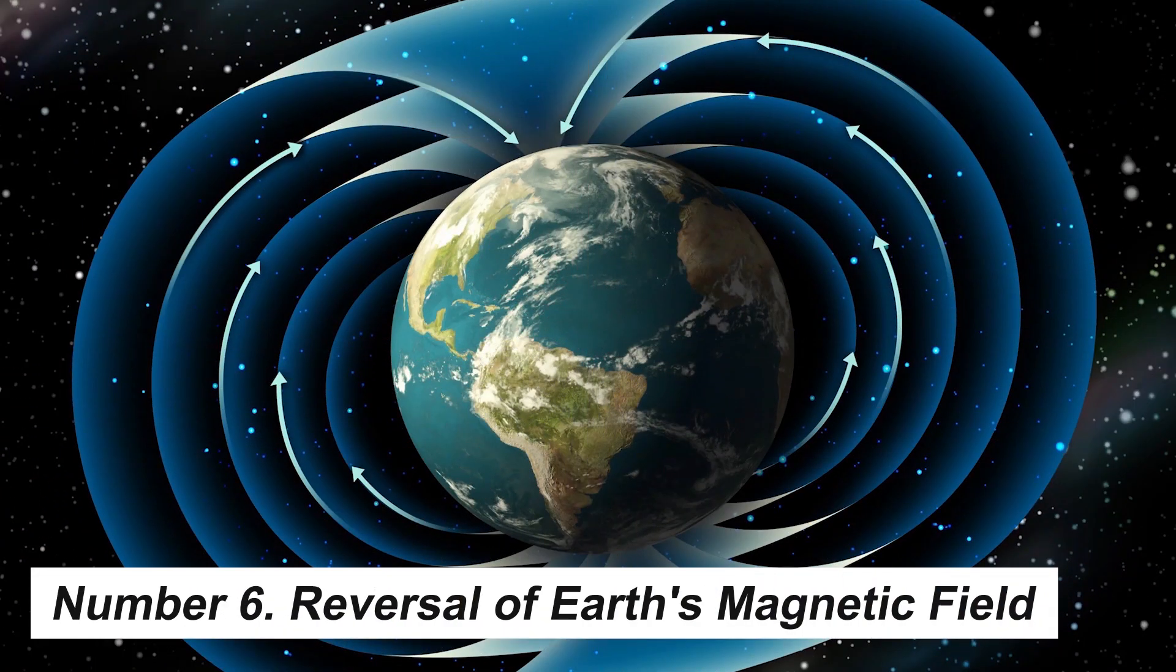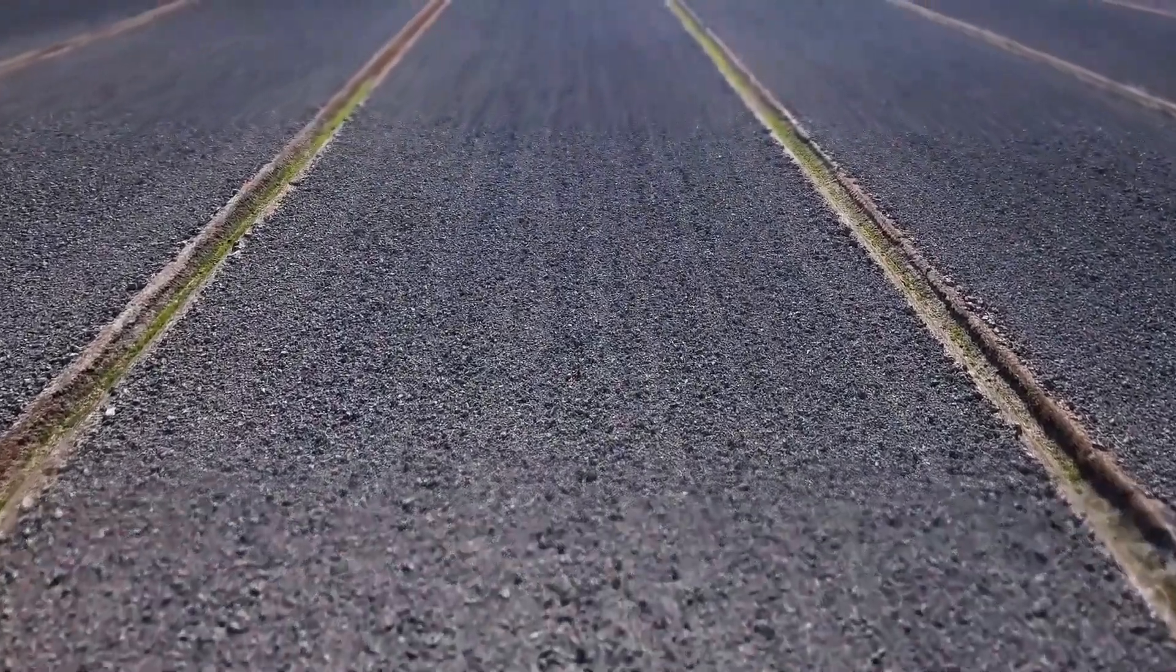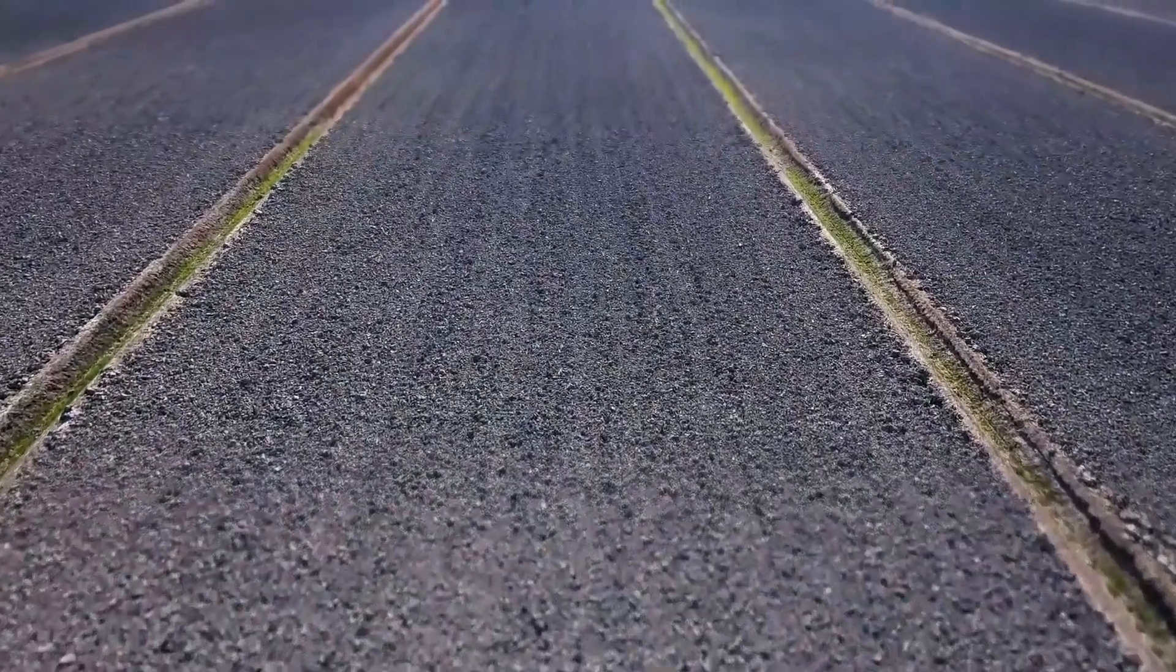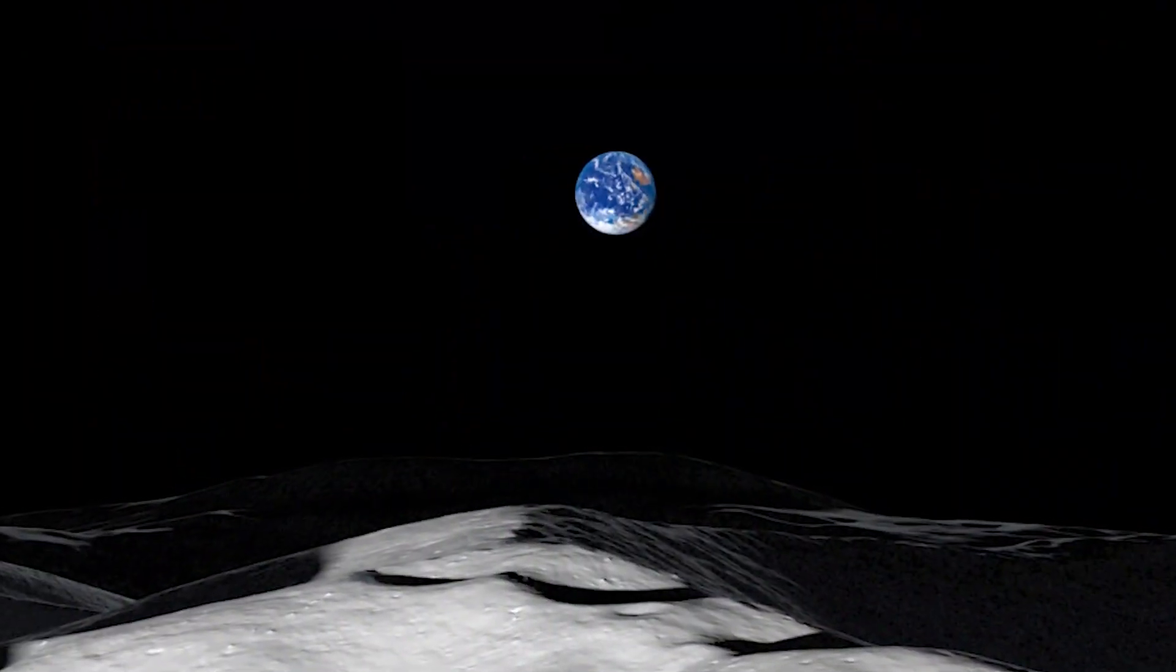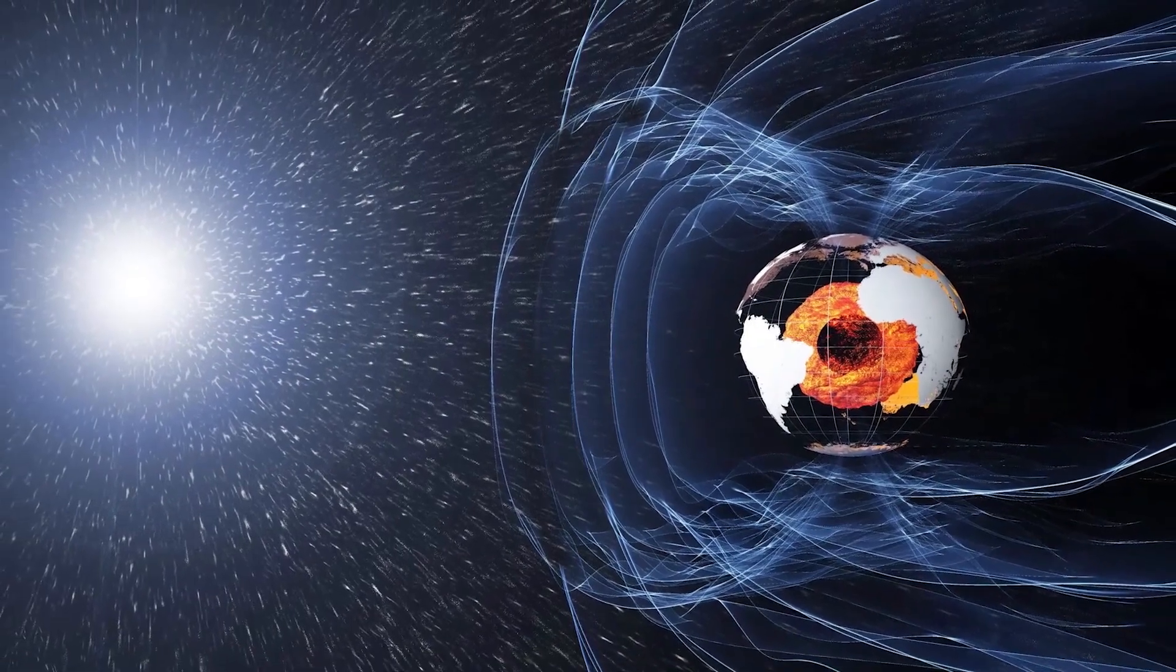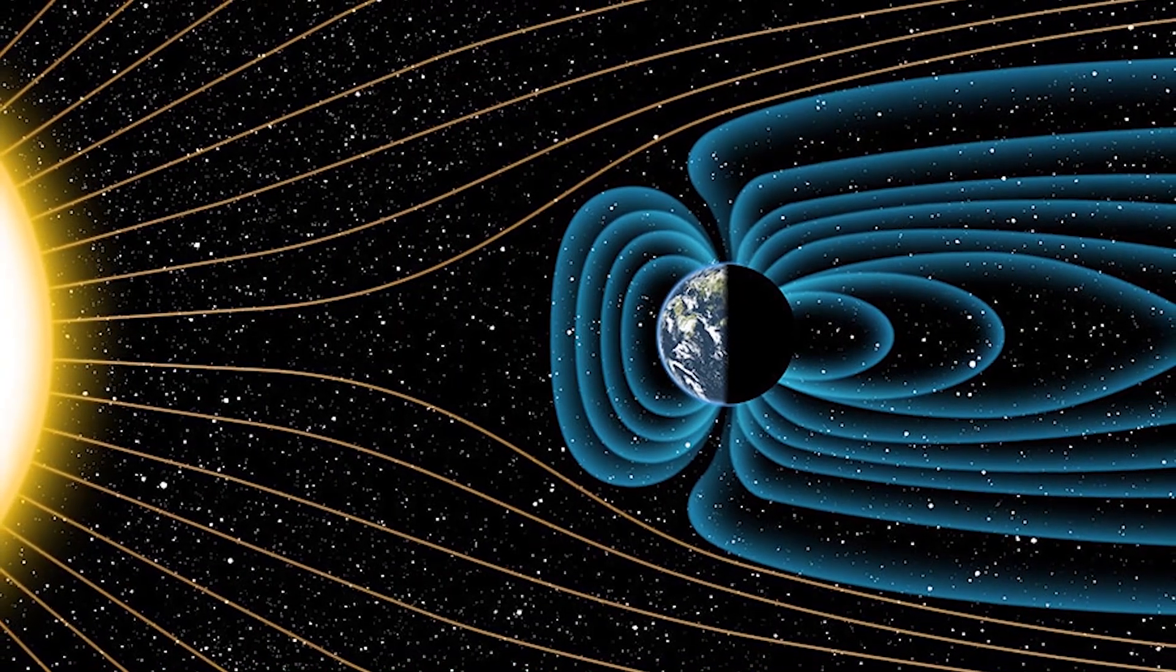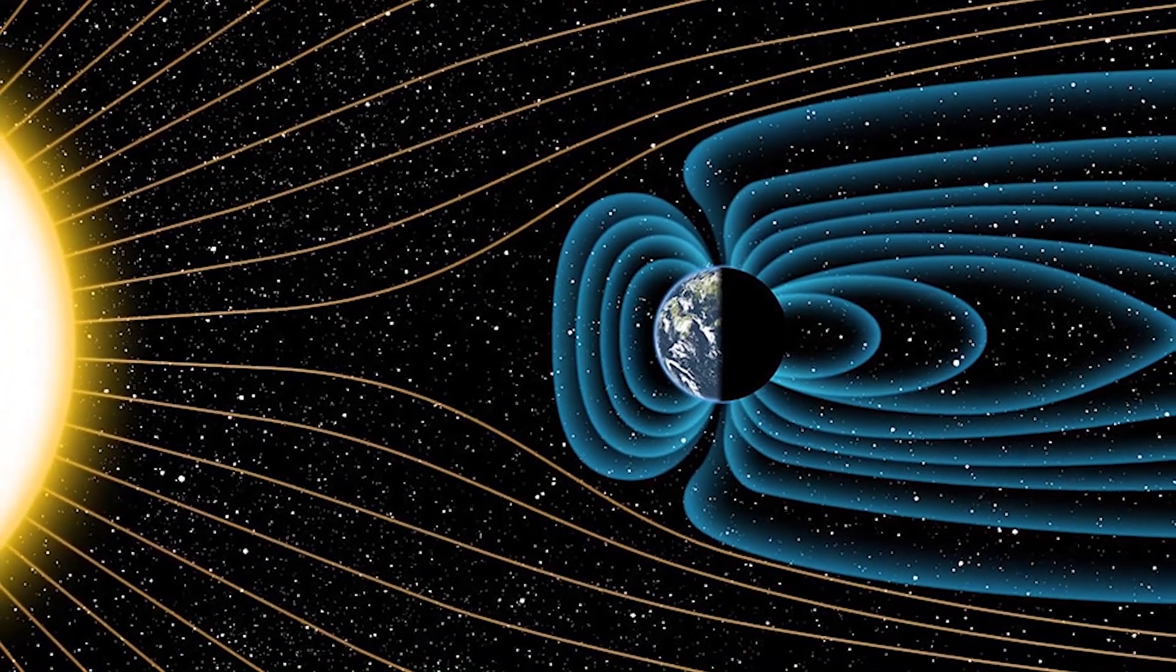Number 6: Reversal of Earth's Magnetic Field. Every few hundred thousand years, Earth's magnetic field almost disappears for a century or so, then gradually emerges with the North and South Poles reversed. The last time this happened was 708,000 years ago, so we may be overdue. Worse, the strength of our magnetic field has dropped by around 5% during the last century.